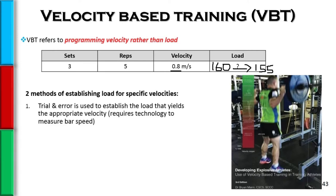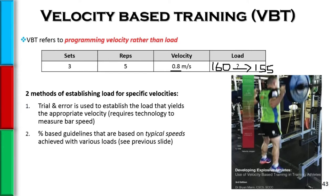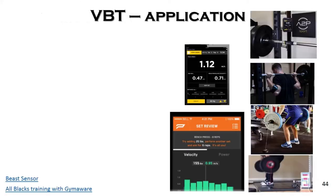There are two methods to establish load for specific velocities. The first is trial and error, which I just described — but you need the appropriate technology. The second is to use those percentage correlations mentioned on the previous slide.